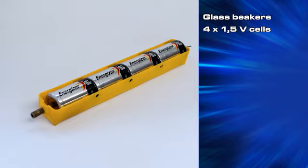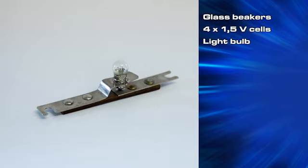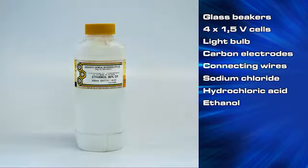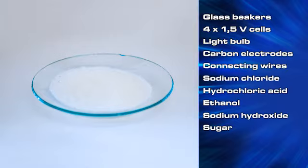The apparatus that you are going to need are the following: glass beakers, a 6 volt power source or four 1.5 volt cells, a light bulb, two carbon electrodes, connecting wires, sodium chloride, hydrochloric acid, ethanol, sodium hydroxide, sugar, distilled water and tap water.